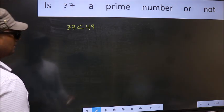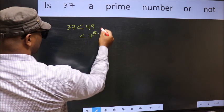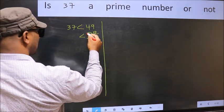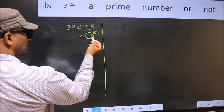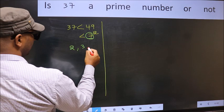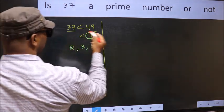Next, 49 is nothing but 7 square. Now you write all the prime numbers less than this number 7. They are 2, 3, and 5.